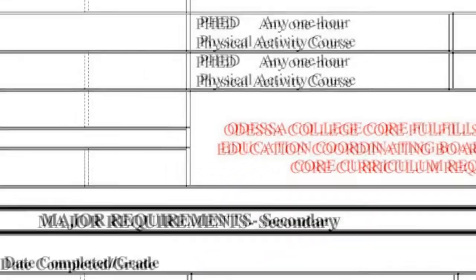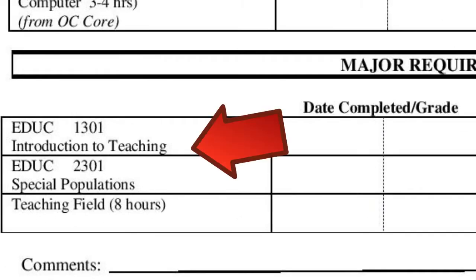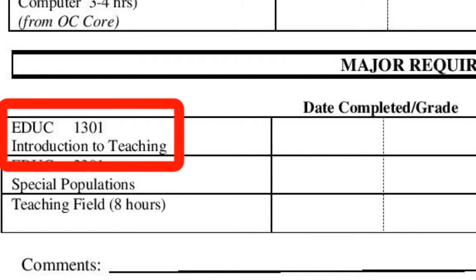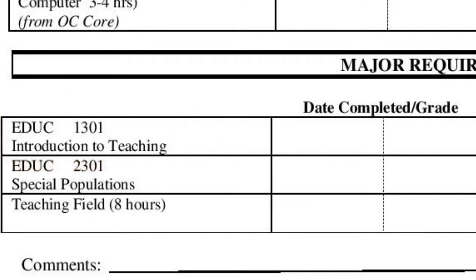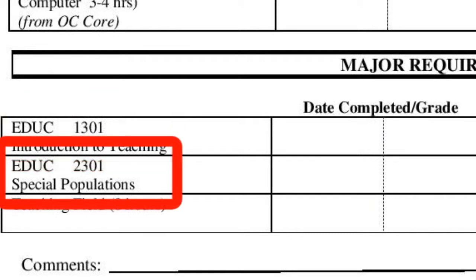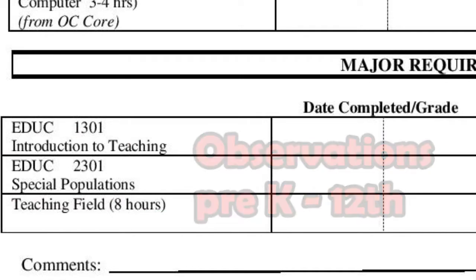Now let us look at the AAT major requirements. You will notice there are two education classes. When you're planning your schedule, make sure to sign up for Education 1301 Introduction to Teaching the first semester you're at Odessa College. This will help to ensure your success in the field of teaching. Both Education 1301 and Education 2301 require observation hours in a pre-K through 12th grade setting.